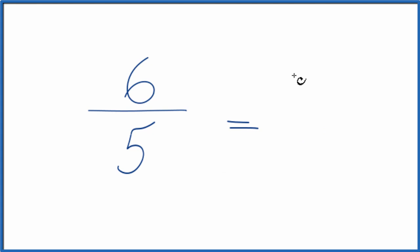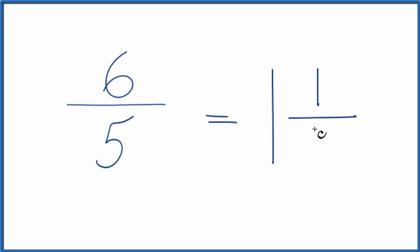So 5 goes into 6 one time with 1 left over and then we just bring the 5 across. So 1 and 1 fifth, that's the mixed fraction for 6 fifths.